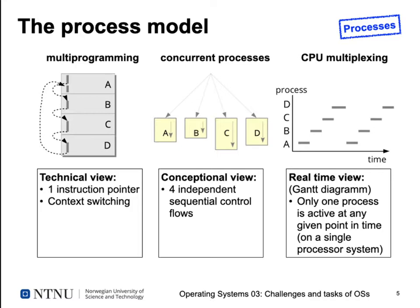The conceptual view doesn't focus on control flow through processes but asks what's going on in the system at all times — which processes are currently active. In this view our multi-programming setup has four processes A, B, C, and D all running independently, each with its own local state and program counter pointing to where it was last running. The operating system takes care of the isolation between the processes, so directly jumping from process A into a function of process B is hindered by the operating system and requires OS interaction.